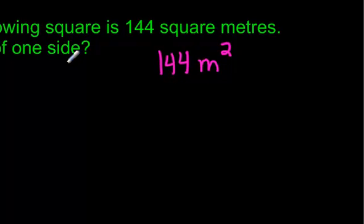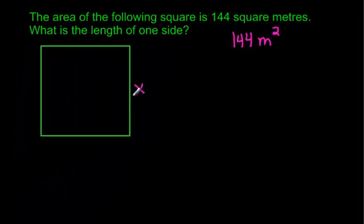It says, what is the length of one side? Well, let's call one side x. Do you remember that to find the area of a square, you always take one side of the square, which is x, and multiply it by the other side, which is also x, because squares have equal sides.